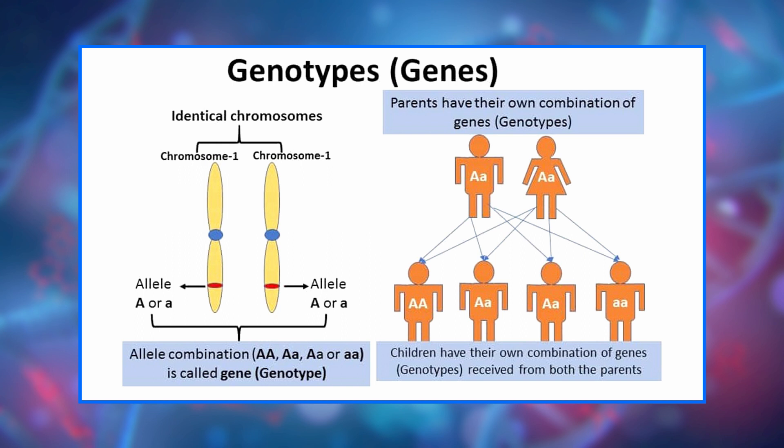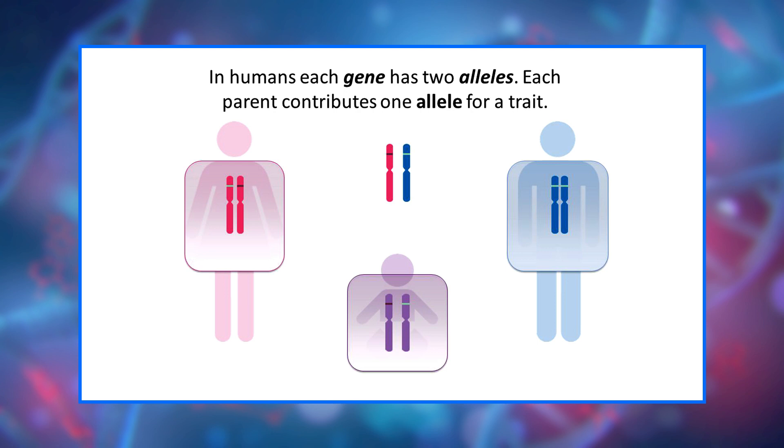Individuals possess two alleles for each trait. One allele is given by the female parent and the other by the male parent. They are passed on when an individual matures and produces gametes — the egg and sperm cells. When gametes form, the paired alleles separate randomly so that each gamete receives a copy of one of the two alleles, the dominant or recessive. The presence of an allele doesn't promise that the trait will be expressed in the individual that possesses it. In heterozygous individuals, the only allele that is expressed is the dominant one.